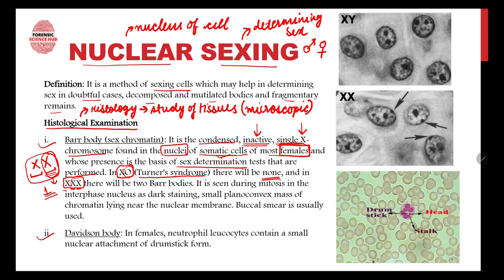Bar bodies are seen during the interphase nucleus of mitosis. They appear as small, plano-convex masses of chromatin that stain darkly and lie near the nuclear membrane. Looking at these pictures, you can clearly see Bar bodies attached to the nuclear membrane. The buccal smear — a sample taken from the mouth — is usually used to obtain cells for this examination.